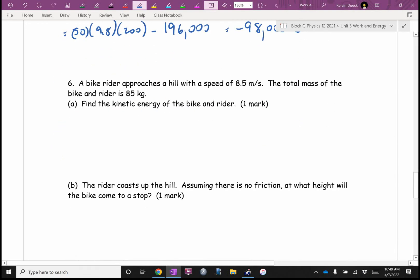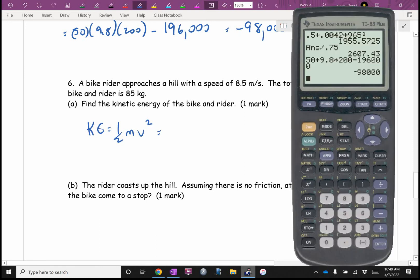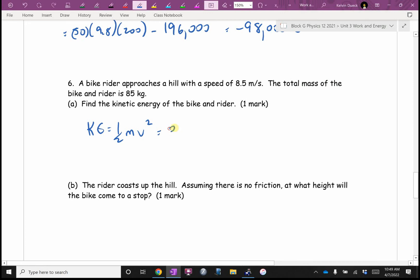So, bike rider approaches a hill with a speed of 8.5. The total mass is that. Find the kinetic. Okay. Kinetic energy is a half mv squared. And I'm going to go straight to my calculator. It's going to be .5 times 85 times 8.5. Don't forget the squared. And I get 3071. I'll go 3070 to three sig figs. Joules.